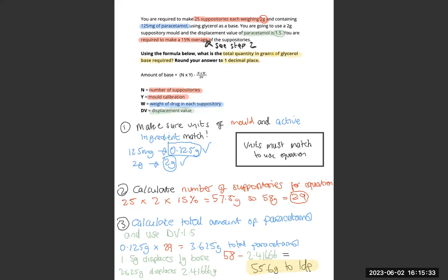Hi guys, back to show you another method. So with this one what you have to do is calculate the number of suppositories which is 29, times that by 2g and you get 58. So 58g is how much base you need.